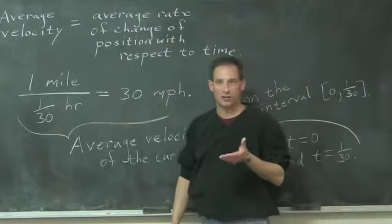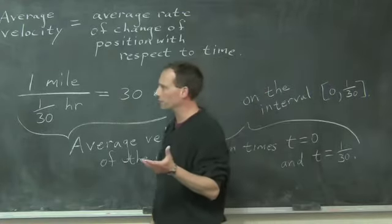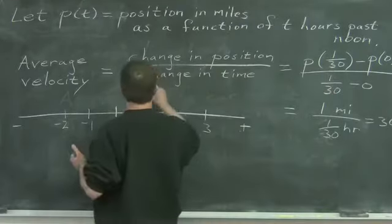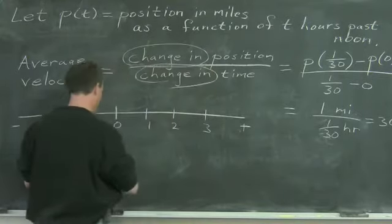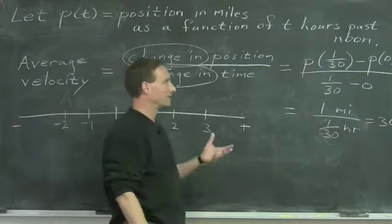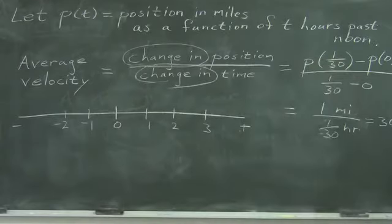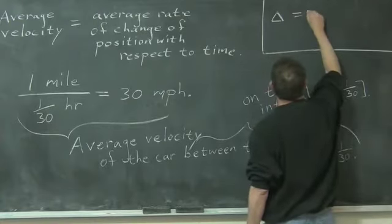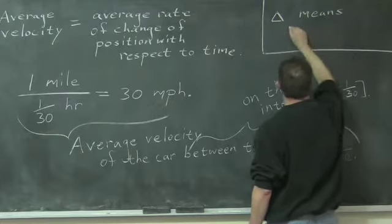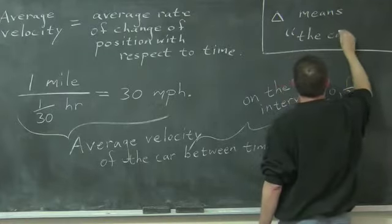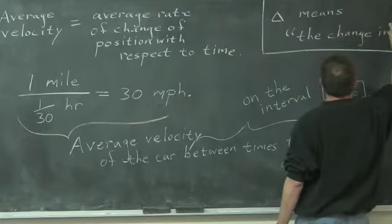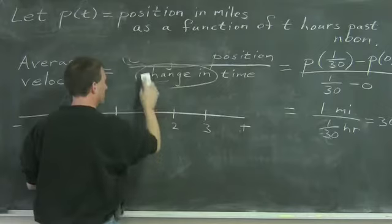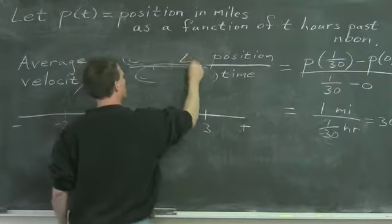There's one last piece of notation before we move on. The phrase 'the change in' comes up so often that we use a symbol for it: the capital Greek letter delta. So the average velocity is written as delta-position over delta-time — the change in position over the change in time.